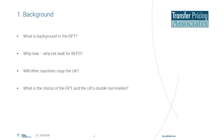For groups with accounting periods falling on or after the 1st of April, they will now need to consider how the new DPT rules apply. Effectively, if a group has diverted profits — and we'll have a look at how diverted profits arise shortly — they will be subject to a punitive tax of 25%, so 5% higher than the current UK corporation tax rate.